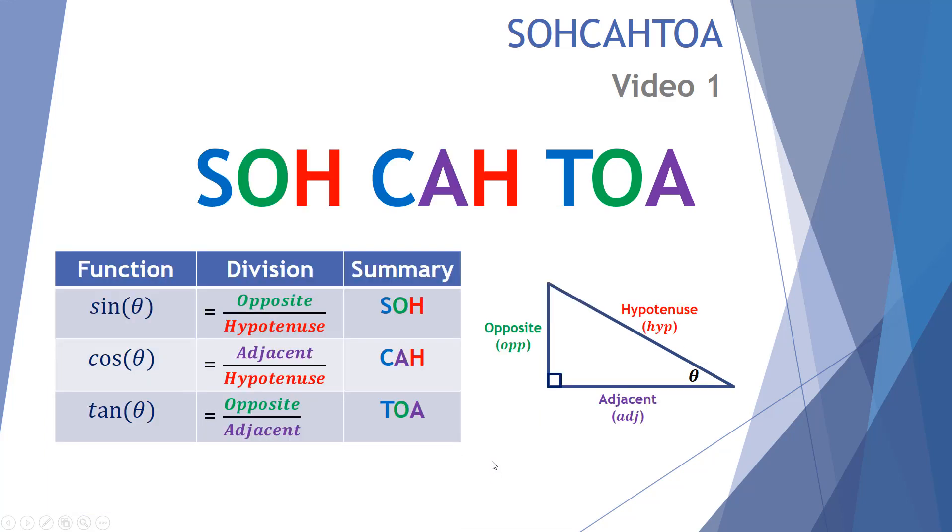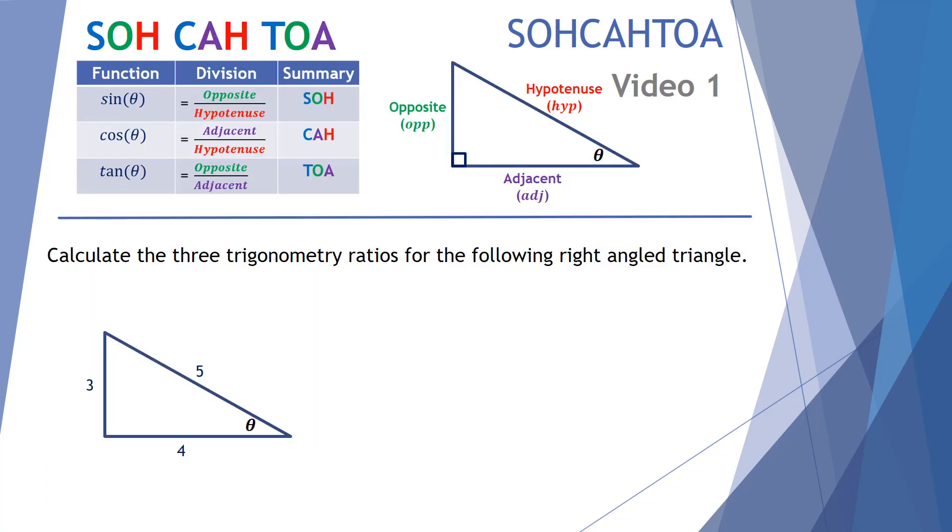Let's see if we can make some sense of this. We want to look at this particular right angle triangle and calculate the three trigonometry ratios for sine, cos, and tan. So first, let's look at the sine of this angle theta. What would that be equal to with the three, four, five triangle?